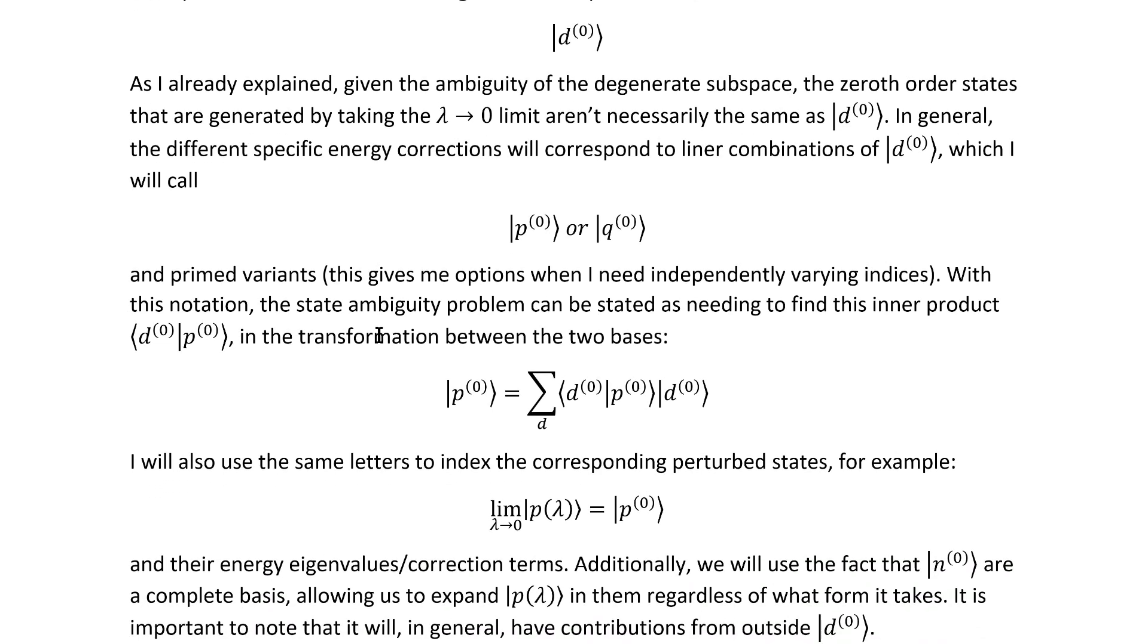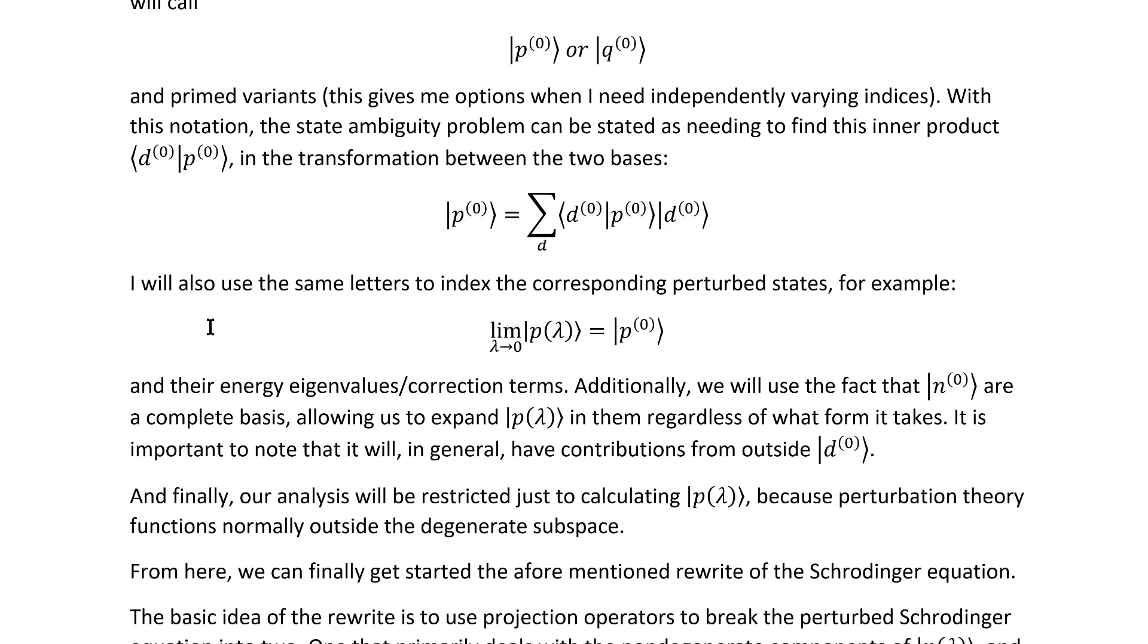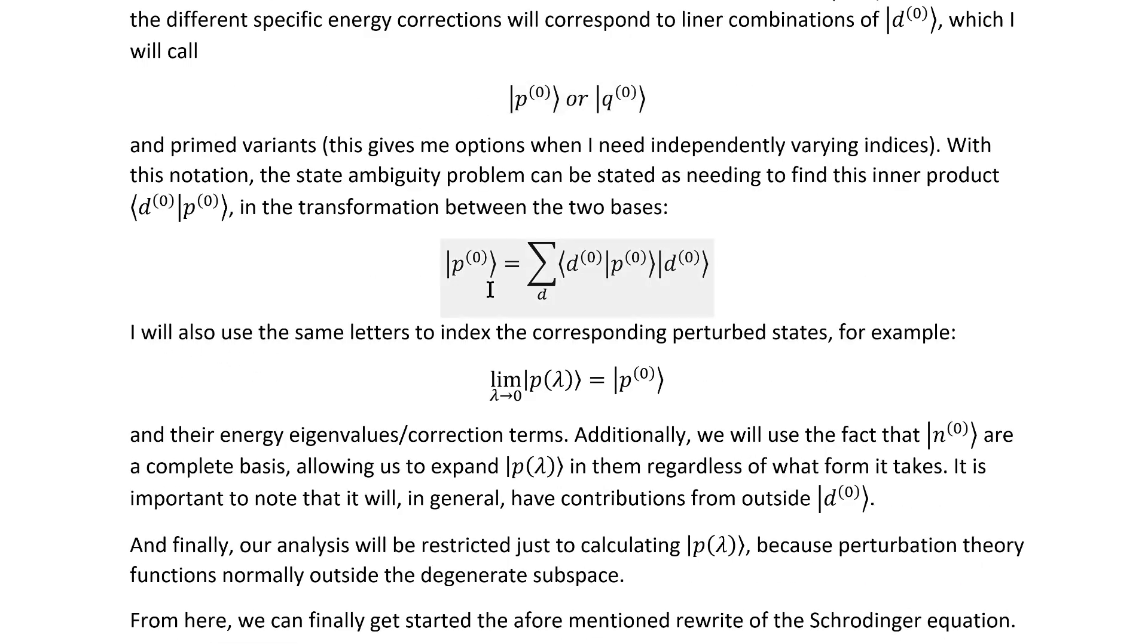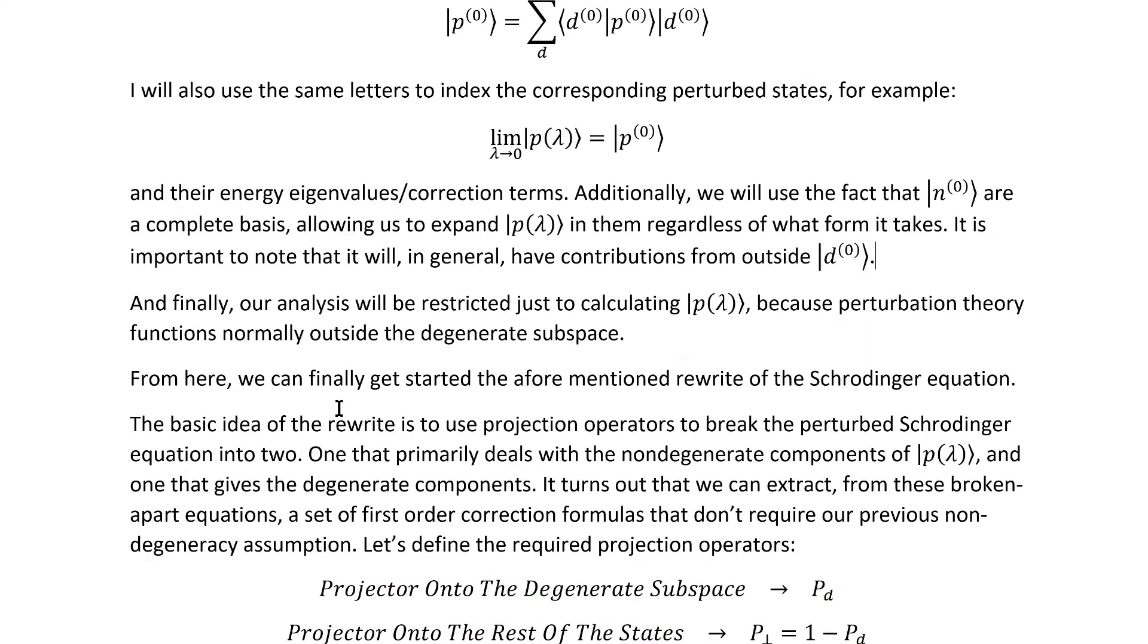With this notation, we can then make a more mathematical statement of the state ambiguity that I was talking about before. Specifically, it can be stated as needing to find this set of inner products, which shows up in the usual transformation for a change of basis. I will also use the same letters as established up here to index the corresponding unperturbed states, so like this, for example, and their energy eigenvalues and correction terms. Additionally, we'll use the fact that the complete set of unperturbed states are a complete basis, allowing us to expand these perturbed degenerate states in them regardless of what form they take. It's important to note that it will, in general, have contributions outside of the degenerate subset because it's been perturbed.